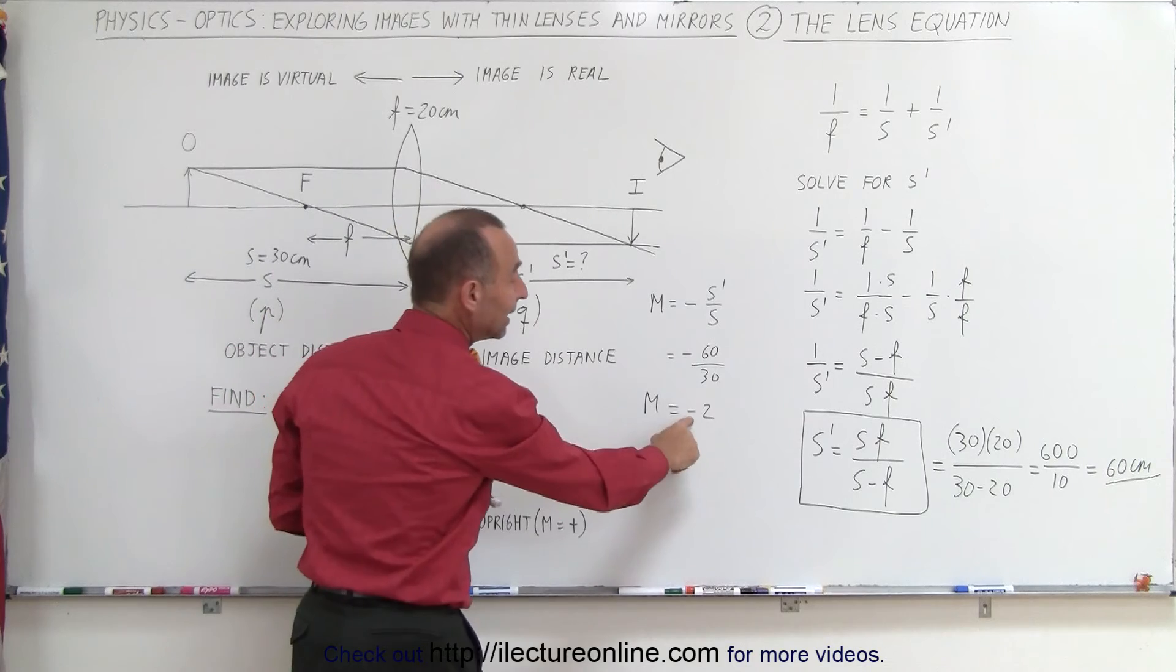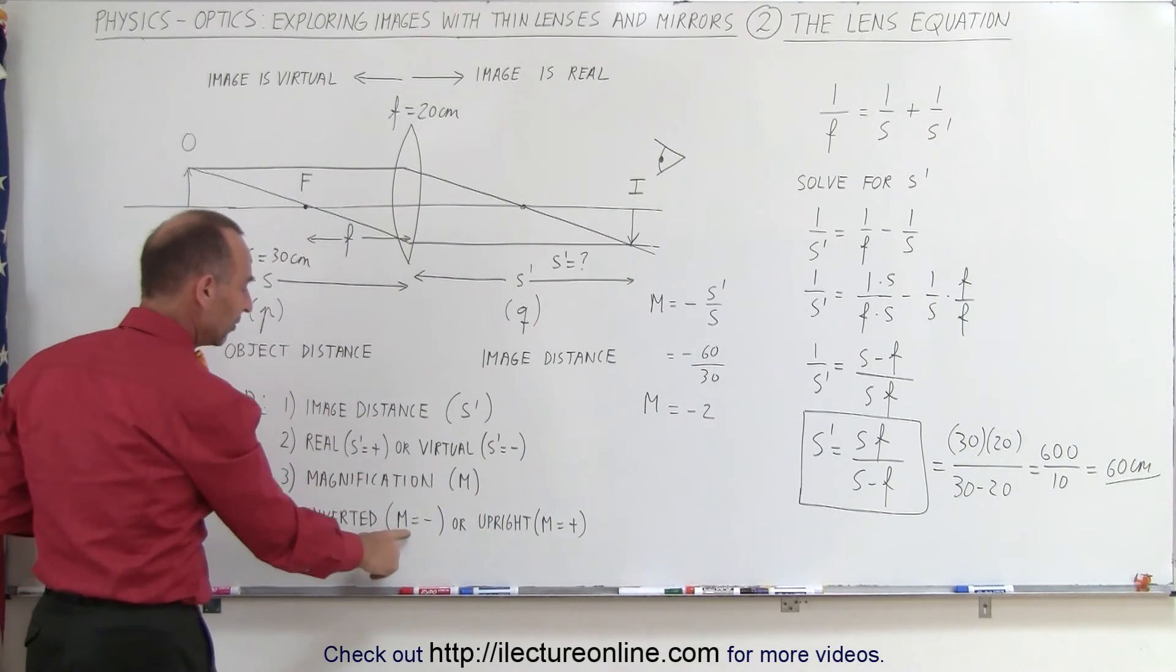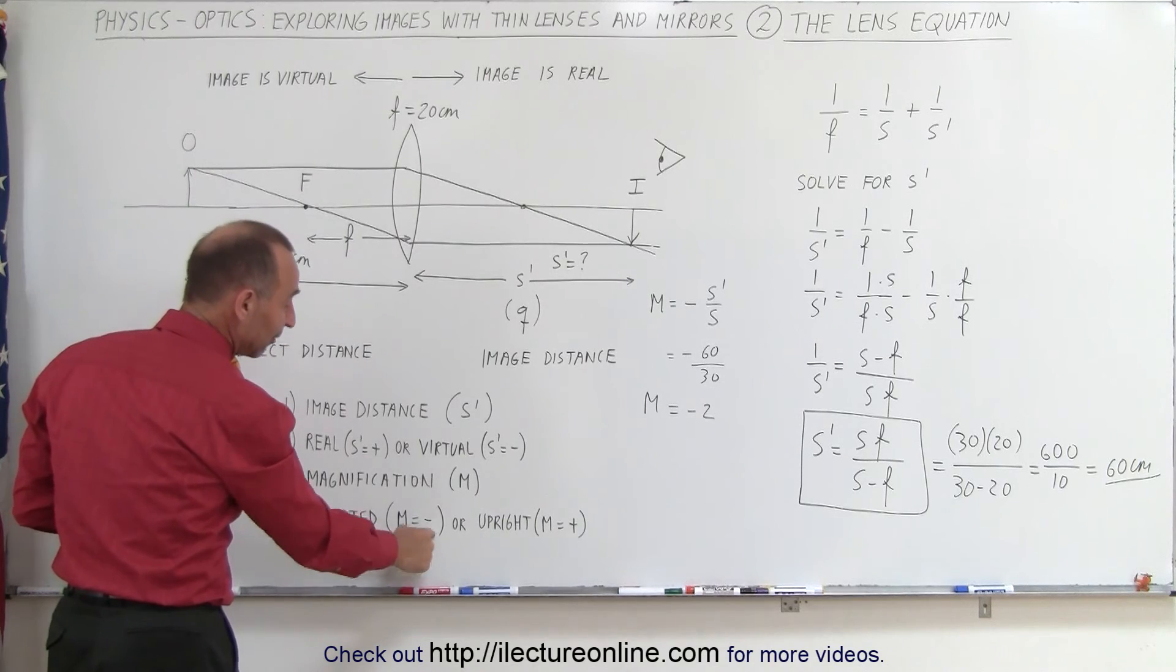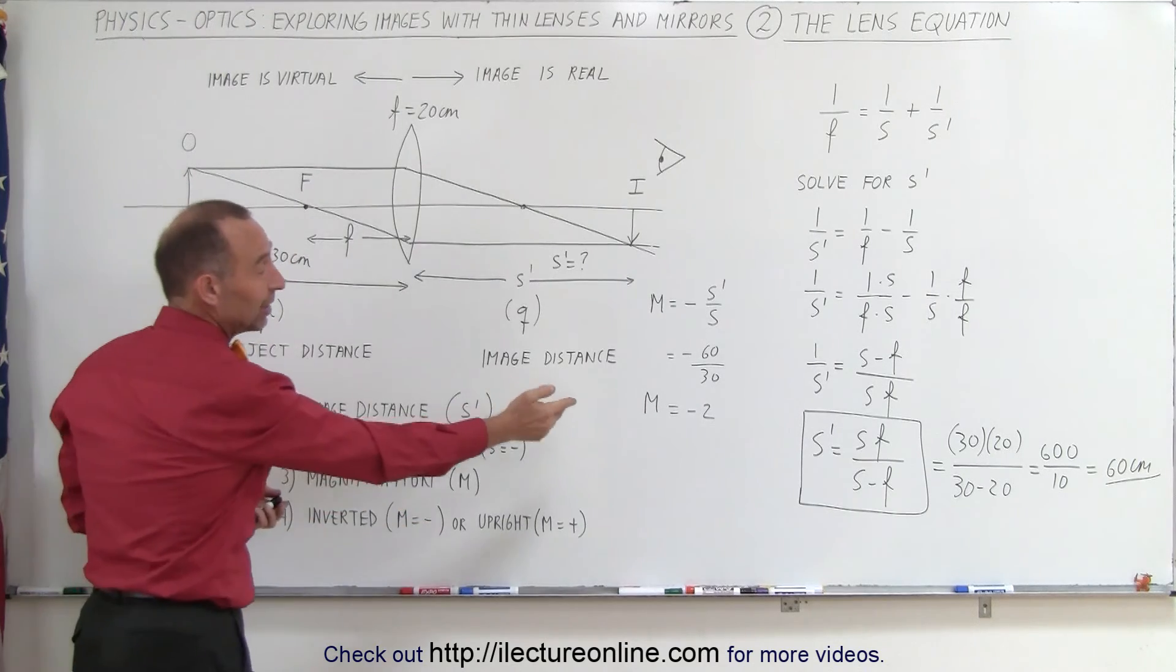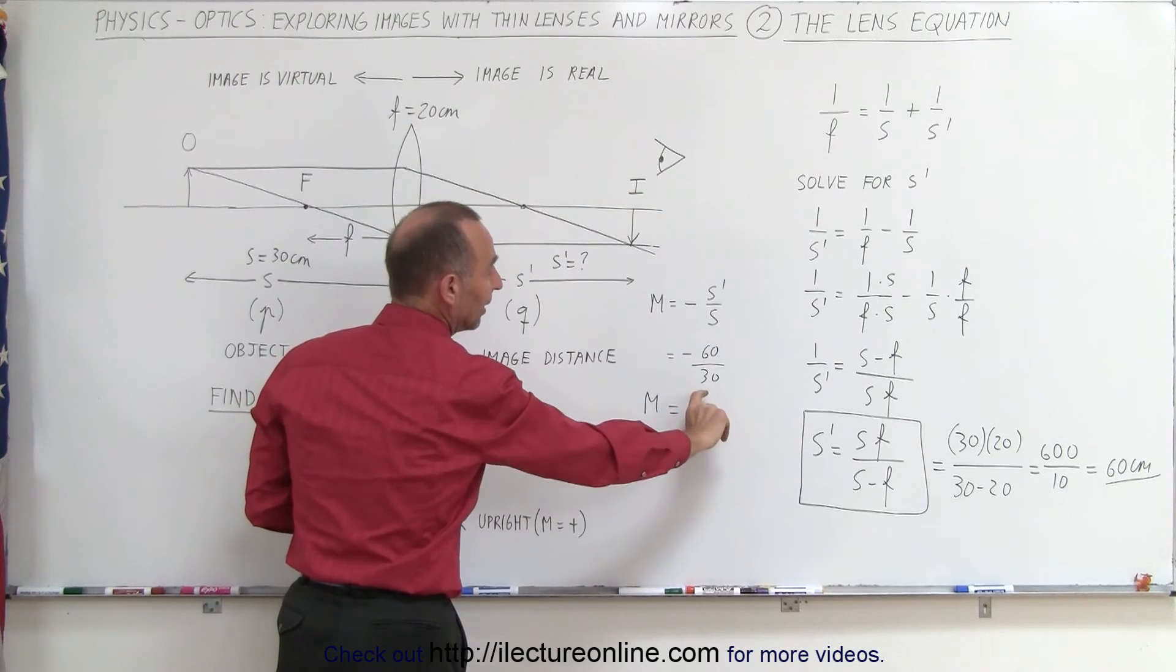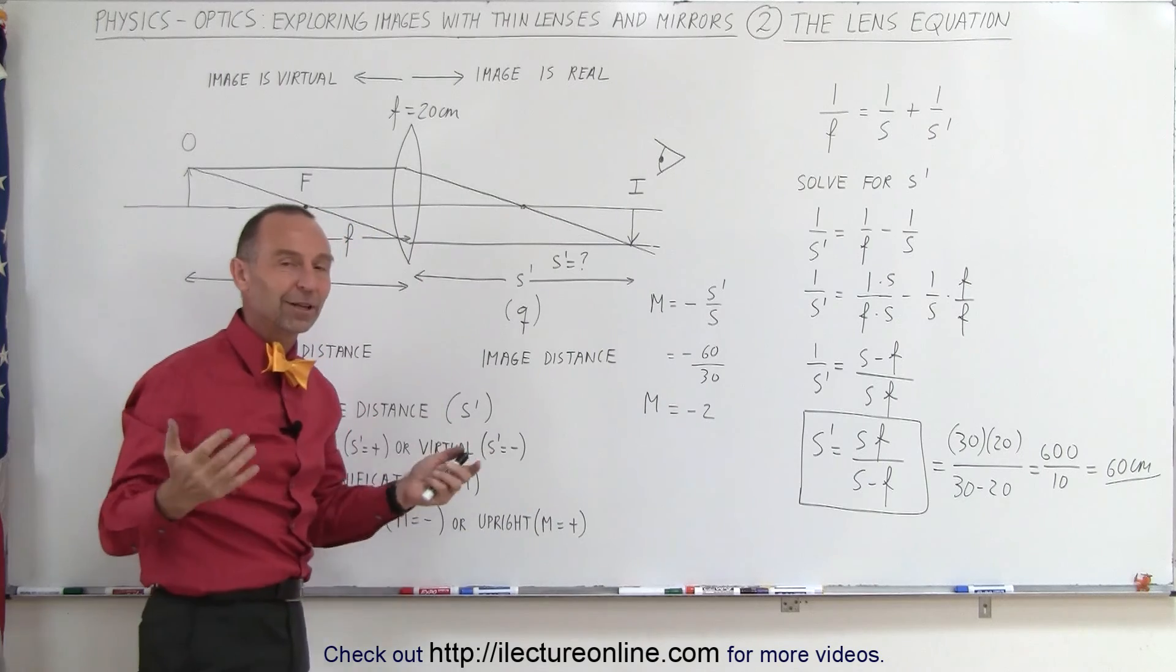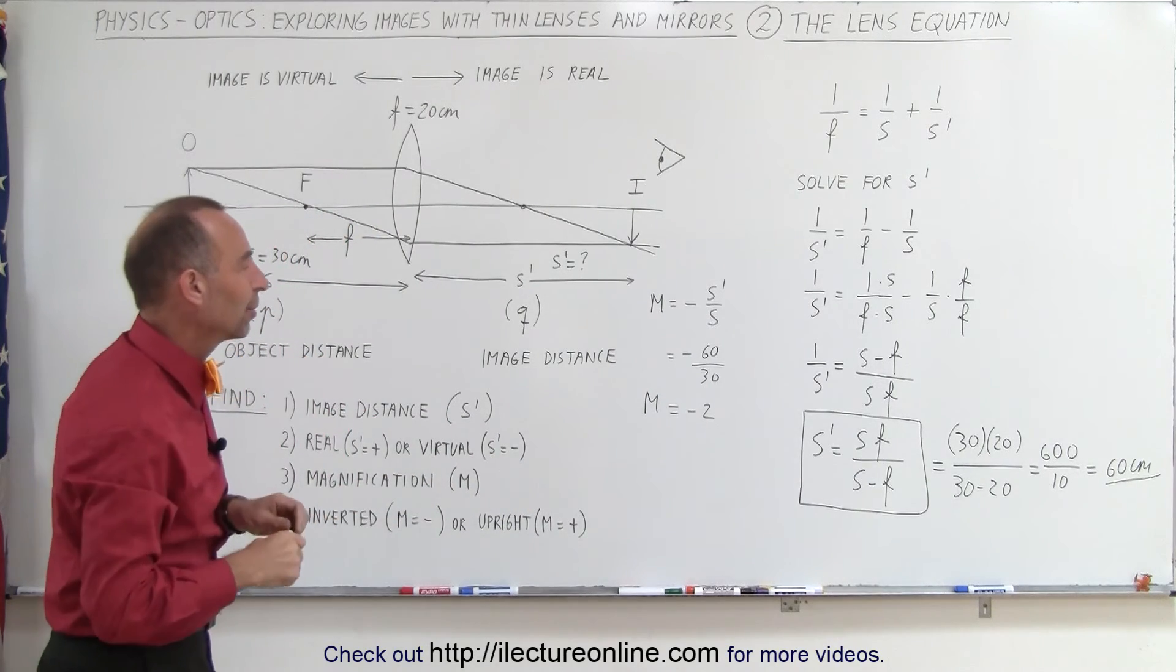This means that the image is twice the size of the object. However, the negative sign indicates that it's upside down or inverted. Inverted means M is a negative or M negative means that it's inverted. This indicates it's an inverted image as it's drawn here and the image is twice the size as the object. I didn't quite get that right here, but of course, I just threw some random numbers in there.